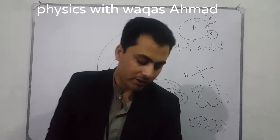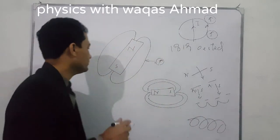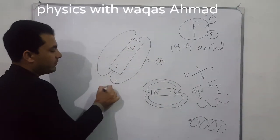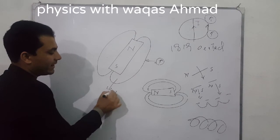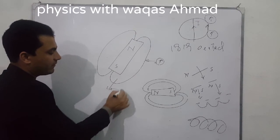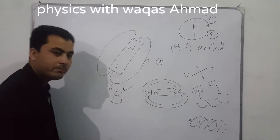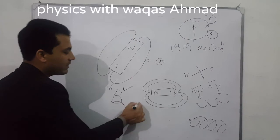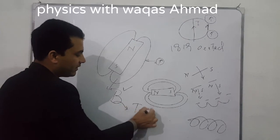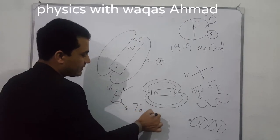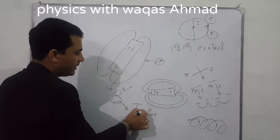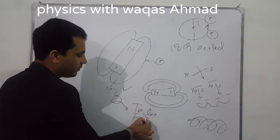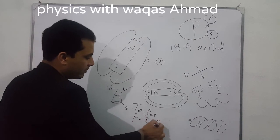So the space or region around a magnet in which its influence can be felt by a ferromagnetic material or by another magnet is known as the magnetic field. The magnetic field, also called magnetic induction, is denoted by B. The SI unit of magnetic field is tesla, and tesla can be defined from the equation F = BIL.